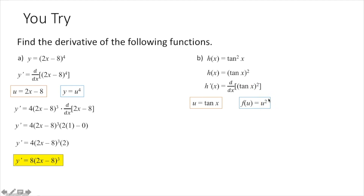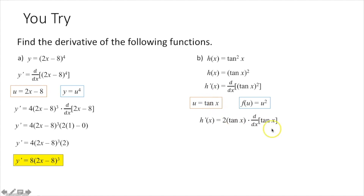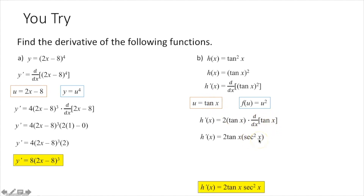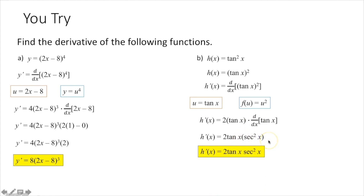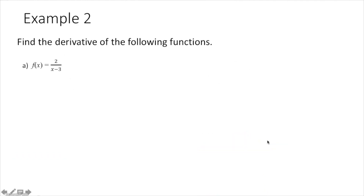The chain rule says I take the derivative of my outer function, so I'm going to get 2u to the first power, or 2 tan x to the first, times the derivative of my innermost function — the derivative of tan x. The derivative of tan x we know is secant squared x. So I can just rewrite this without the parentheses, and I'm done.